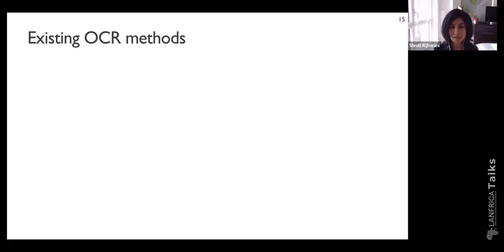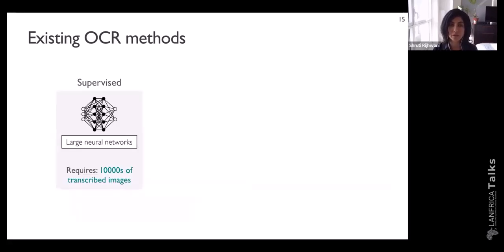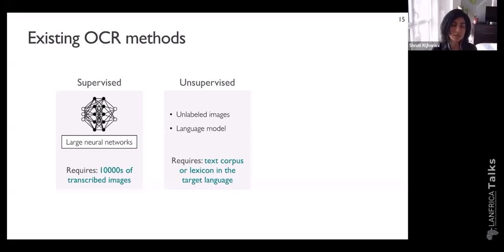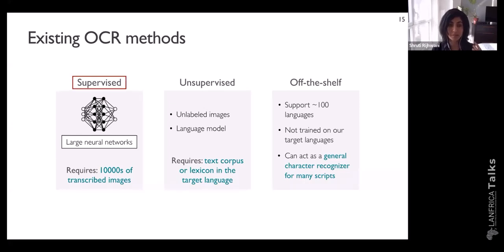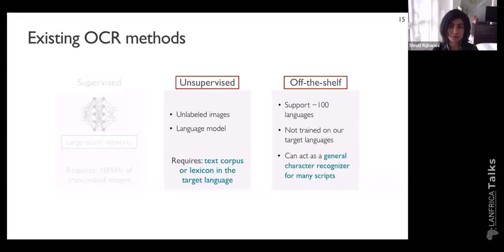OCR is a well-studied task with a variety of methods: supervised models based on large neural networks, using tens of thousands of transcribed images for training; unsupervised methods that rely on a language model in the target language requiring a text corpus; and large-scale off-the-shelf tools with trained models for up to a hundred languages. Although off-the-shelf tools aren't trained directly on the low-resourced languages in our dataset, they do support many languages and scripts, so they can potentially act as a general character recognizer. Since training a supervised model from scratch is infeasible with our small dataset, we focus on analyzing the performance of existing unsupervised and off-the-shelf systems in low-resourced settings.